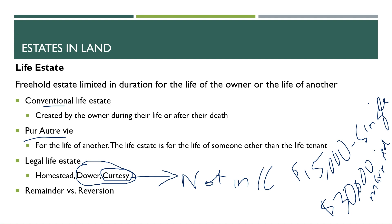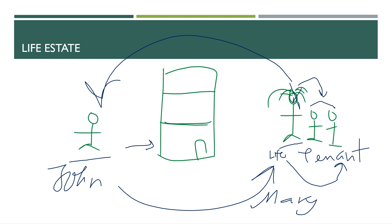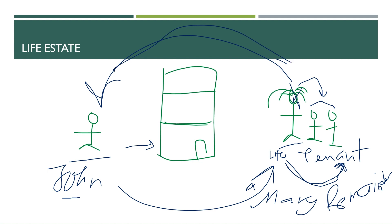Finally, let's talk about remainder and reversion. Going back to the John and Mary example: when John gave the property to Mary and stipulated that when Mary passes it goes to the children, the children are a remainder — they have a remainder interest in the property, essentially waiting to get the property when she passes away. On the other hand, if John had said the property is yours but when you pass away it comes back to me, that is reversion — reverting, going back. So John would have a reversionary interest in the property in that case.